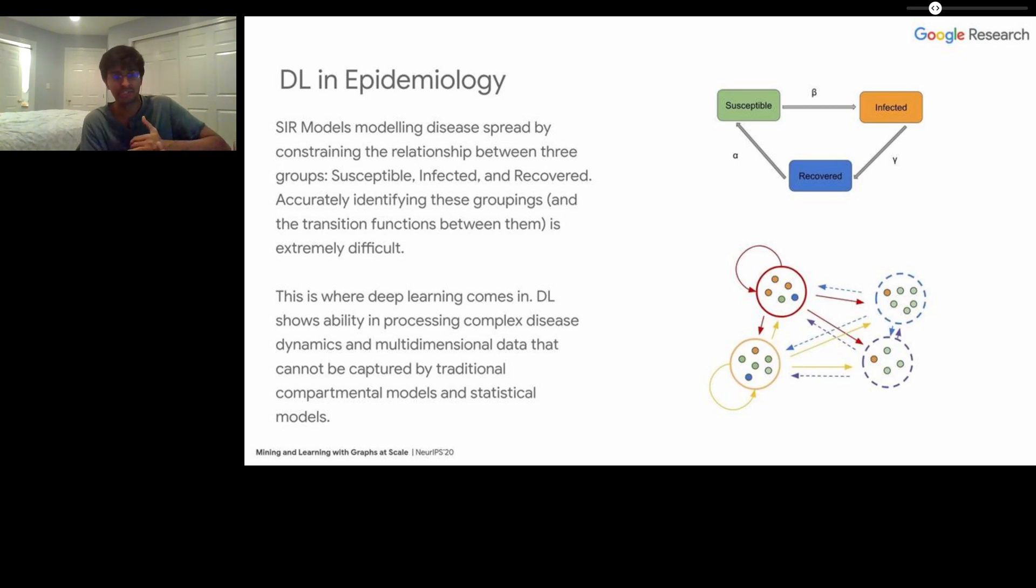When you start thinking about epidemiology and disease spread, there's so many factors that go into it. You have the obvious things like the incubation period of the disease or the infectiousness, but then you also have things like, what's the weather like? What's the underlying population? How old is the underlying population? Has the state instituted lockdown yet? These other factors are very critical for understanding how disease is spreading through our society, but they're very difficult to model through math. I don't know of a mathematical model for modeling lockdown. As a result, deep learning has this really nice ability to process complex disease dynamics and multidimensional data that cannot be captured by traditional compartmental models. We think deep learning is really well suited for the general problem of epidemiology.